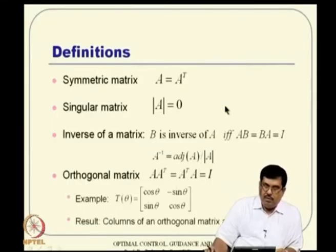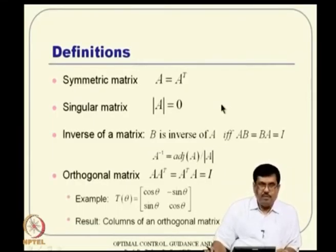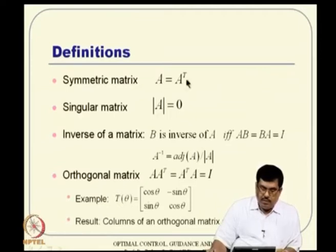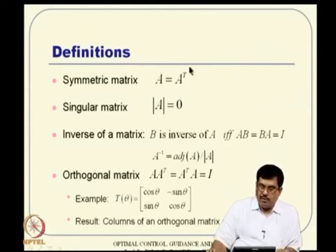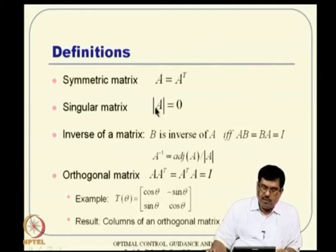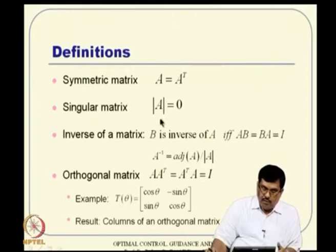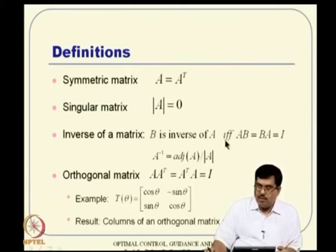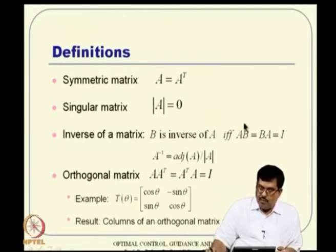Coming to the review of matrix theory — let us start with very simple definitions. A symmetric matrix satisfies A equal to A-transpose. When the determinant of A becomes 0, assuming A is a square matrix, the matrix is a singular matrix, meaning its inverse does not exist. The inverse of matrix A: if B is the inverse of A, then it satisfies AB equal to BA equal to identity. As a standard result, A-inverse turns out to be the adjoint of A divided by the determinant of A.